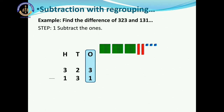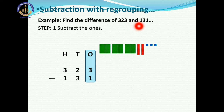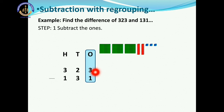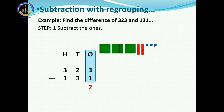Now let us see another example. Find the difference of 323 and 131. Step 1 is subtract the ones. Here on the ones place, 3 and 1. Can we subtract 1 from 3? Yes, definitely we can. Cut out 1 one from 3 ones. So, 3 minus 1 is equal to 2.